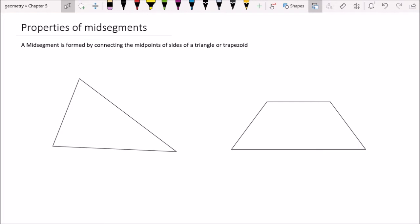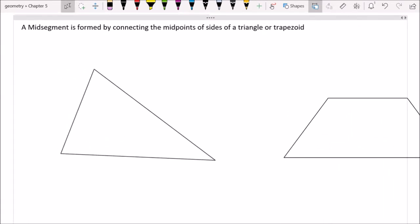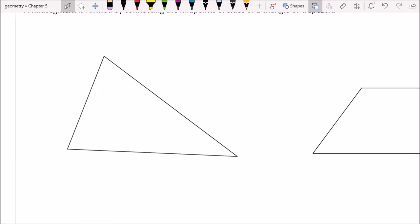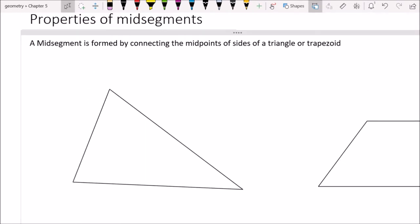So what is a midsegment? All a midsegment is, it's when we connect the midpoints of the sides of a triangle or trapezoid. I'm going to zoom in on this triangle here and show you what that would look like. Midsegment is when we connect the midpoints of the sides. Let me grab a midpoint here, and the midpoint of this side is probably somewhere in here, and let's connect them. So, connected.